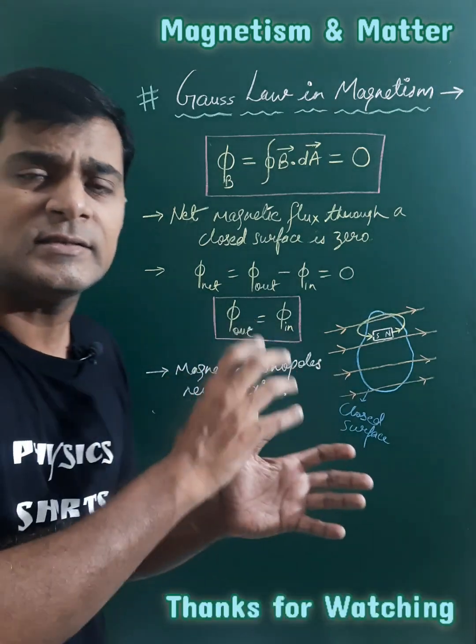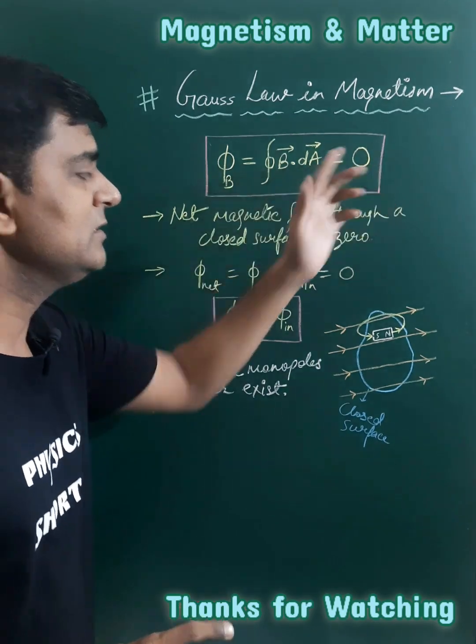So whether the dipole or magnet is inside the closed surface or not, the magnetic flux for a closed surface is always zero.